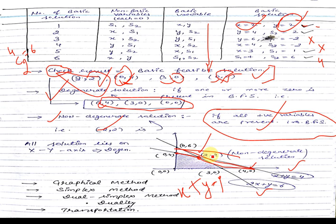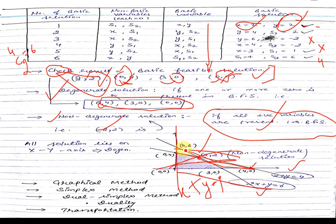So this will be the solution. Just remember one thing: all the solutions which lie on the x-axis and all the solutions which lie on the y-axis are degenerate solutions, because on the x-axis the value of y is zero, and on the y-axis the value of x is zero.